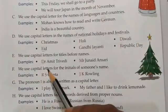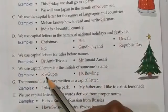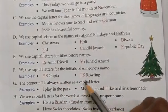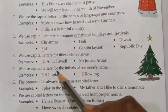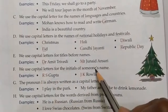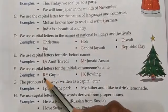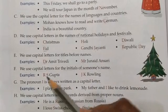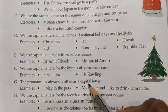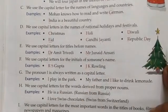We use capital letters for the initials of someone's name. If we are writing in short form or initial form, those letters are in capitals. For example, R.S. Gupta — R and S are capital. J.K. Rowling — J and K are capital because these are the initials of someone's name.